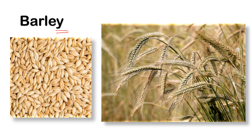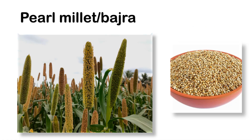And then barley. Barley is a plant, and the grain is a grain. Next crop is pearl millet. Pearl millet is a plant, and the grain is a grain.